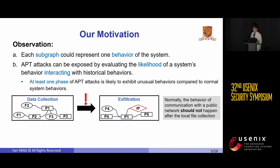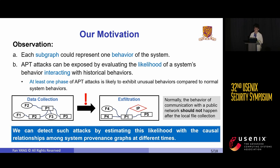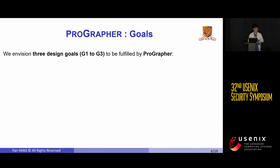For instance, if we were to observe the system creating abnormal web traffic to communicate with a public network after completing local data collection, it would be considered anomalous and may indicate exfiltration. We can detect such attacks by estimating the likelihood with causal relationships among system provenance graphs at different times. Based on this motivation, we have established three design goals for ProGrapher.